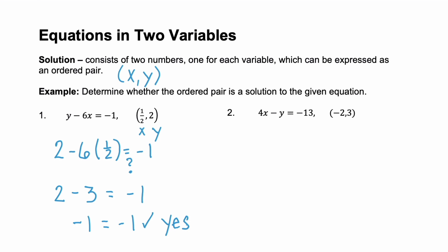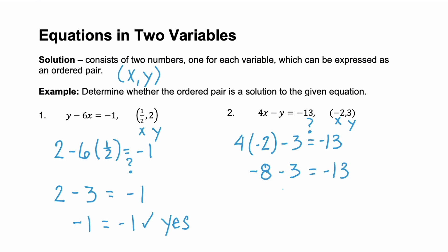Let's look at example 2. Here we have 4x minus y equals negative 13, and we're given the ordered pair (-2, 3). So x is negative 2 and y is 3. We plug those into our equation: 4 times negative 2 minus 3, checking if this equals negative 13. Well, 4 times negative 2 is negative 8, and negative 8 minus 3 is negative 11. Does negative 11 equal negative 13? Not the last time I checked. So the answer is no — the ordered pair (-2, 3) is not a solution to that equation.